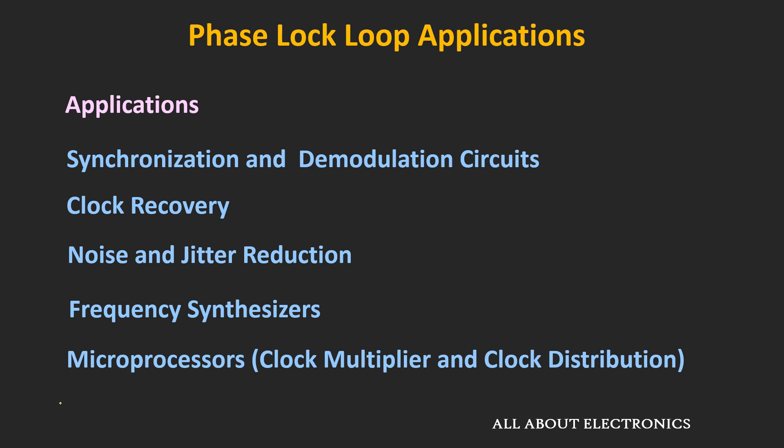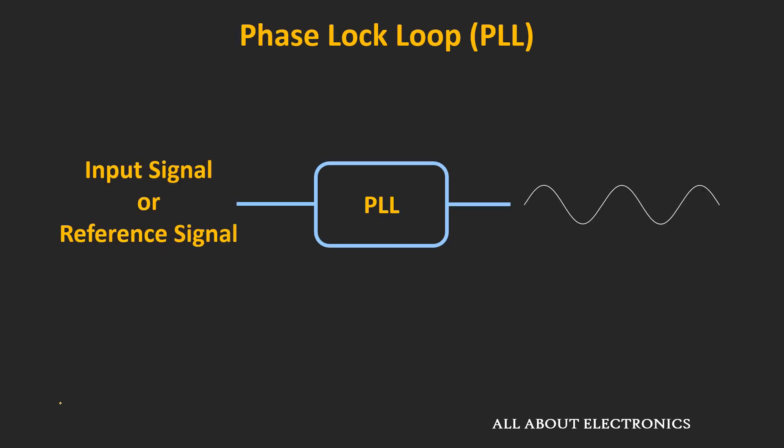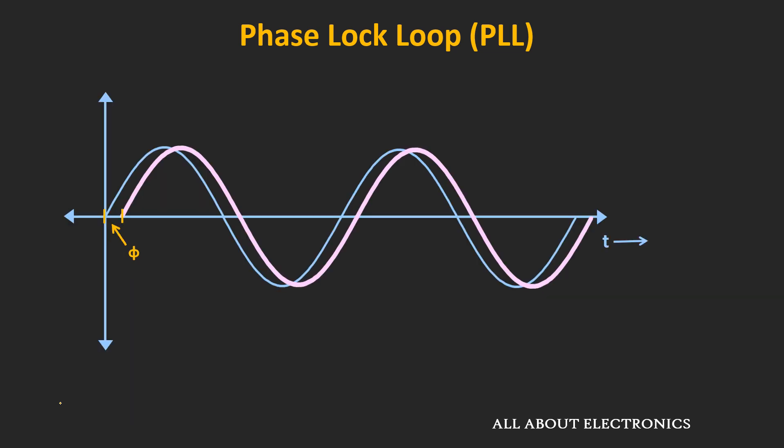Now let's understand how this phase locked loop works. As its name suggests, it is a control system or control loop which maintains the same phase between the input and the output signal. Let's first understand what we mean by phase difference. As you can see, the two signals are of the same frequency, but there is a constant phase difference between them.